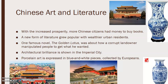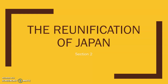With increased prosperity, more Chinese citizens had money to buy books, and a new form of literature grew popular with the wealthiest urban residents. One famous novel, The Golden Lotus, was about how a corrupt landowner manipulated people to get what he wanted. Architectural brilliance is shown in the imperial city, which is what all these pictures are of. Porcelain art is expressed in blue and white pieces, which were very collectible among the Europeans. That is it for section one.